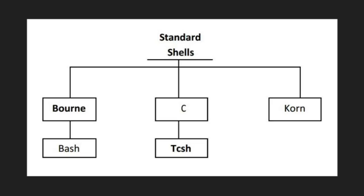You can always switch among the shells, and on switching, it forms a relationship between the shells. The C shell received its name from the fact that its commands were supposed to look like C statements. A compatible version of C shell called TCSH is used in Linux.